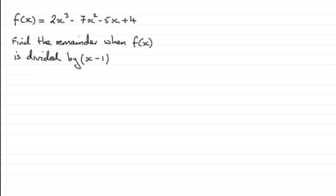So, we can start then by just saying that the remainder, since they want to know what that is, the remainder equals f(1). So, if we substitute 1 in for x, we've got 2 times 1³, minus 7 times 1², minus 5 times 1, plus 4.